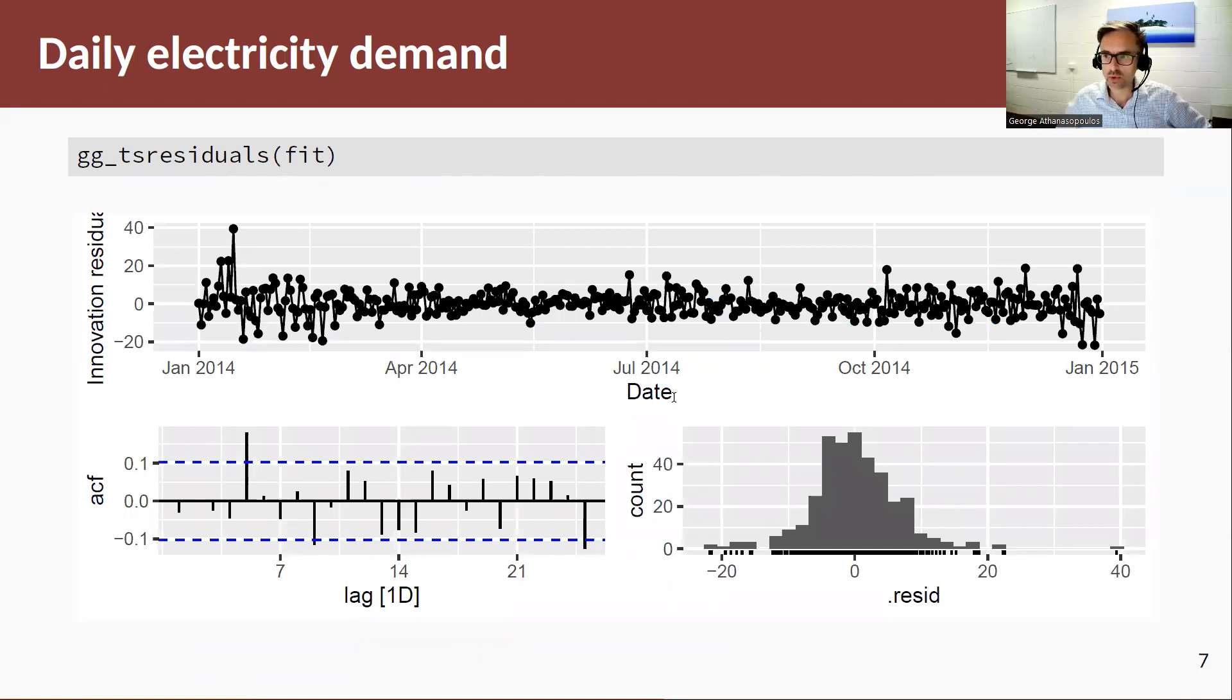So if I look at the residuals of my estimated model, well, there's a couple of things here that we can notice. Let's start from a time plot. Seems that the variation in the summer months and as we approach the summer months here is higher than the rest of the sample. So maybe a log transformation might help us overcome that.